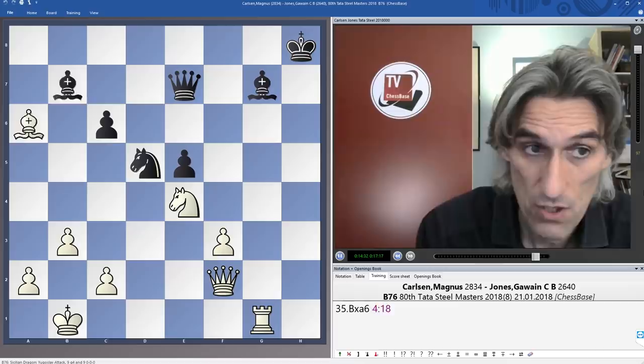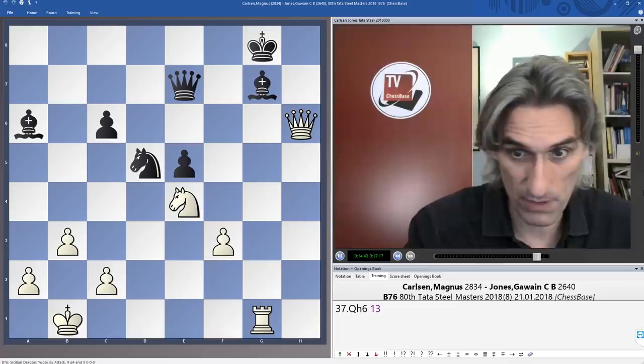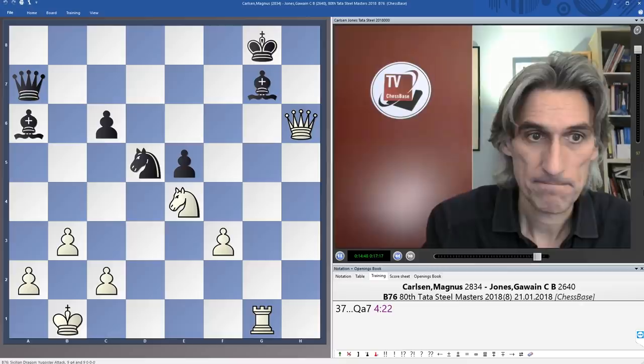But now Magnus just took on a6. Just took the rook. Queen check. And moved in. So Magnus is even ahead on material now. Rook and two pawns against two minor pieces. White's pieces are just dominating here completely. There really is no defense at all.